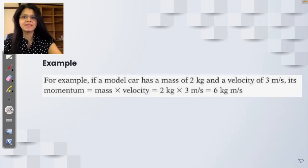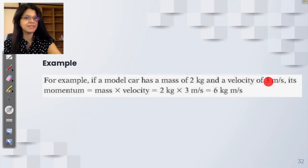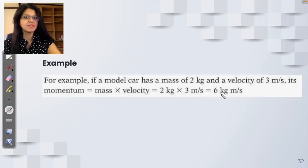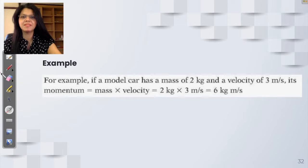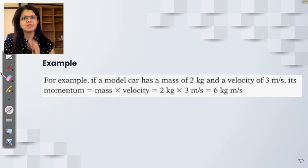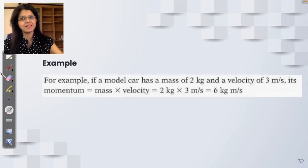For example, if a model car has a mass of 2 kg and a velocity of 3 meters per second, its momentum is mass times velocity: 2 kg × 3 m/s = 6 kg meters per second. Simple formula. Not difficult so far, and it is going to remain straightforward as we move through the video.